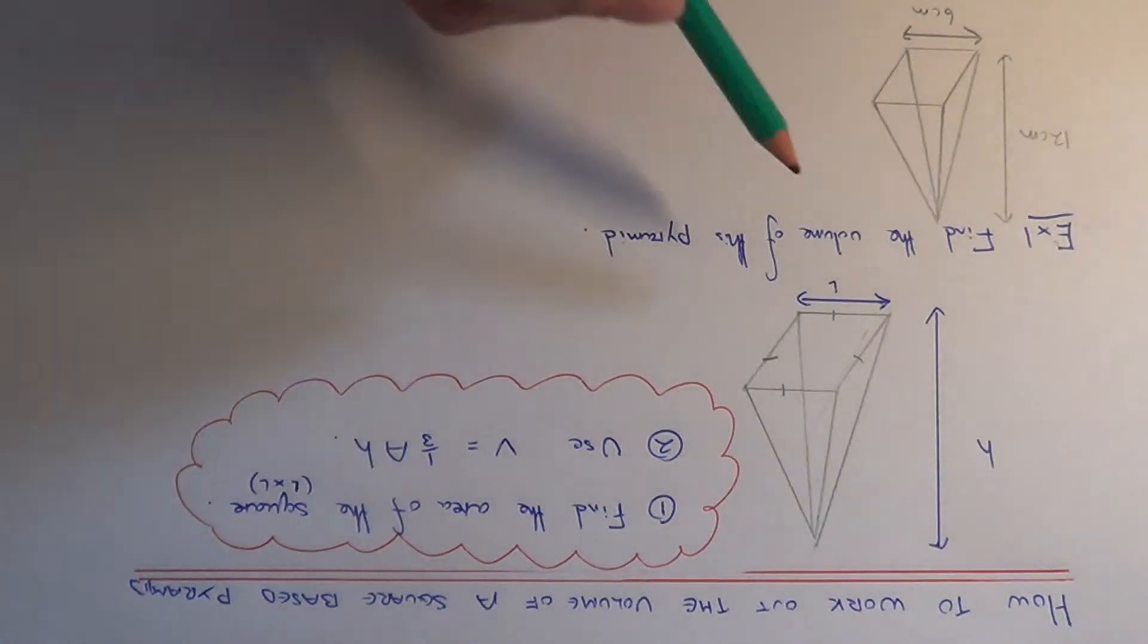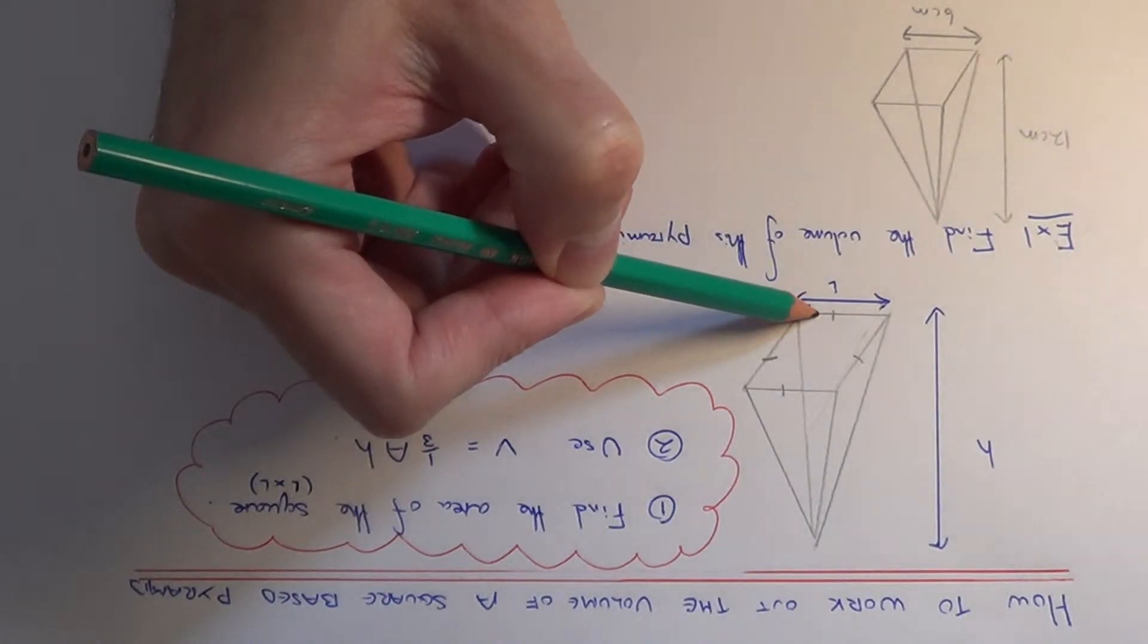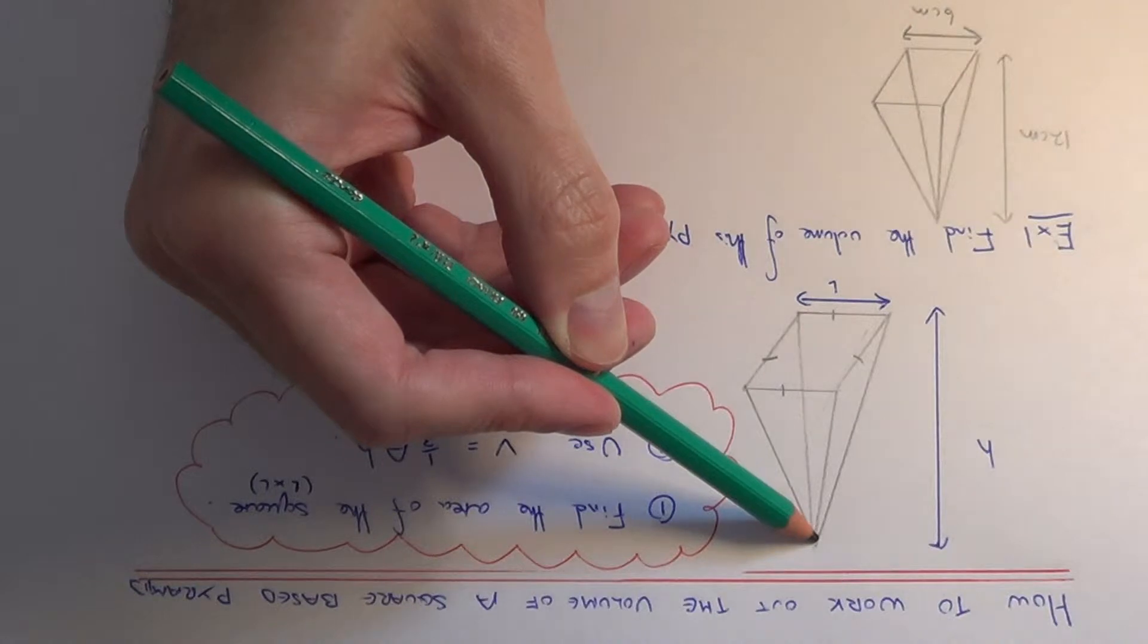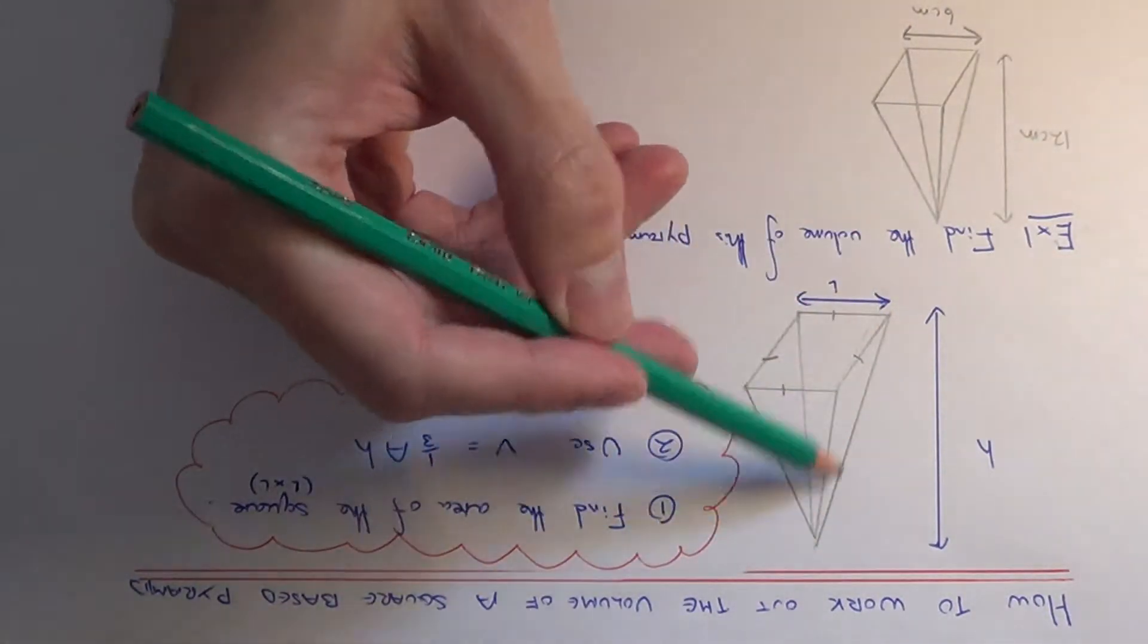Make sure that the height is the vertical height directly from the base of the square pyramid up to the point at the top. It's got to be the vertical height, not the sloping height.